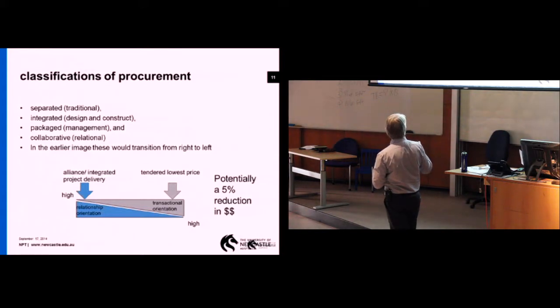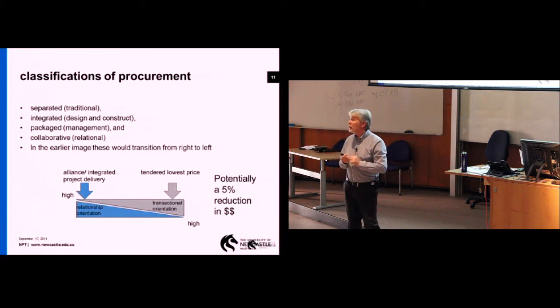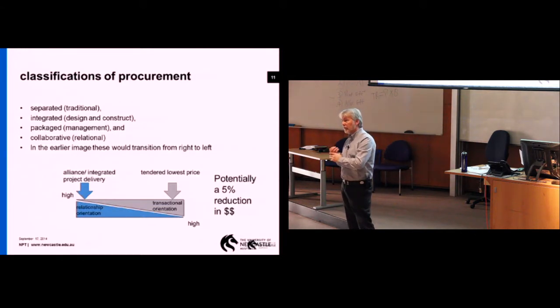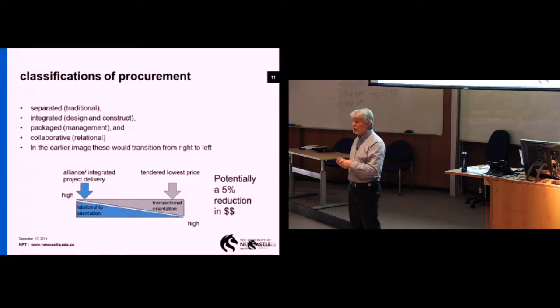Now research tells us that, in some instances, you can look at a 5% reduction in the price or the delivery cost, the target outturn cost of a project, if you utilize the right procurement. The general figure you can look at is 5%. Of course that may increase significantly, it may be slightly less. So it is important, and it's worthwhile. When you think about productivity, you think about the gross national product, you think about the affordability of infrastructure, you think about billion dollar mega projects, it can make an enormous difference to the outcome from a societal basis and from an organizational perspective.